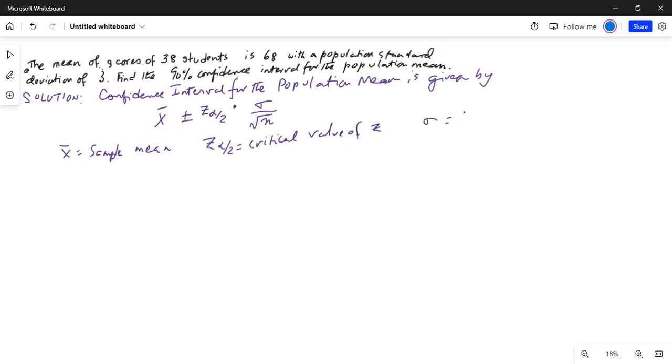Sigma is your population standard deviation, n is your sample size, and c is your level of confidence.